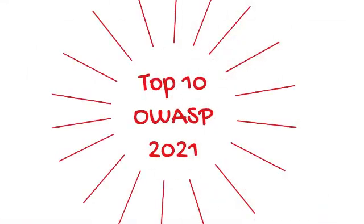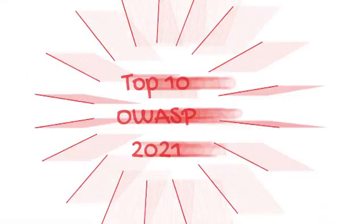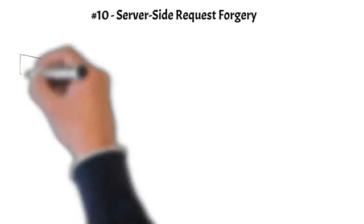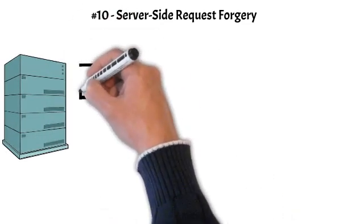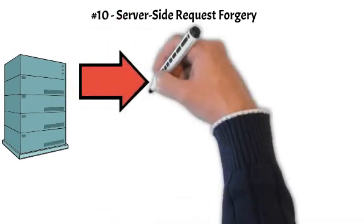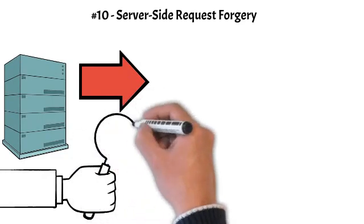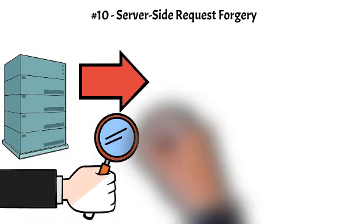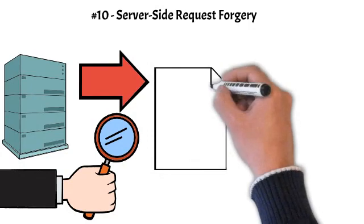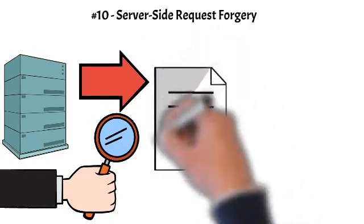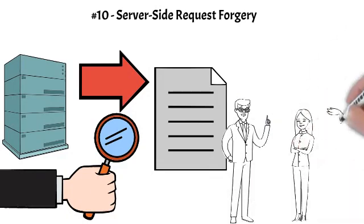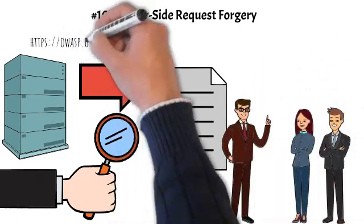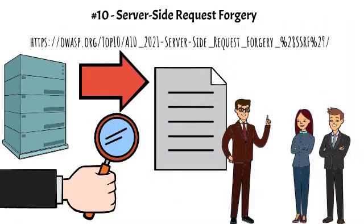Example of OWASP Top 10 — Number 10: Server-Side Request Forgery. Added from the Top 10 community survey at number 1, the data shows a relatively low incidence rate with above-average testing coverage, along with above-average ratings for exploit and impact potential. This category represents a scenario where the security community is telling us this is important, even though it's not illustrated in the data at this time.